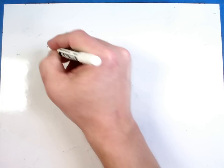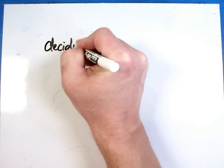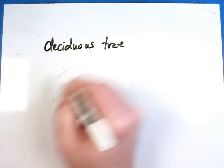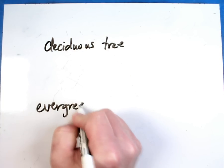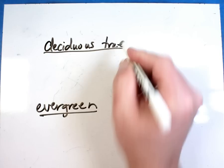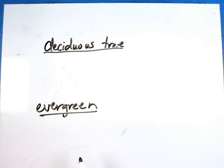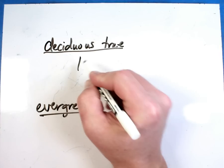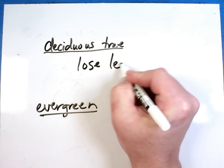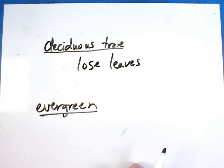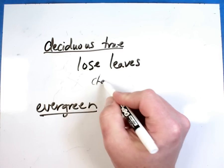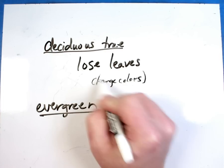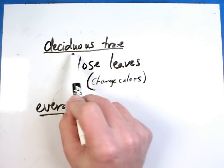Now I'm going to give you two other terms: a deciduous tree and an evergreen. Deciduous trees are the ones that lose their leaves — these are the trees where you have to go rake the yard because the leaves come off. In the fall, these are the ones that change colors and fall off and you'll end up having to rake them up. These are deciduous trees.